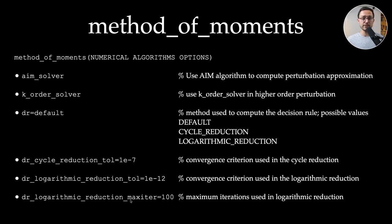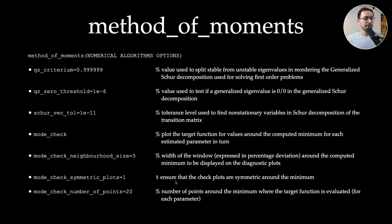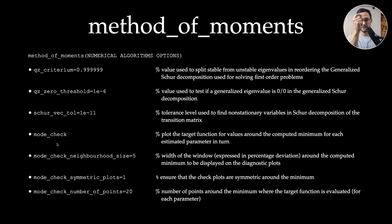An important option is 'mode_check', which plots the objective function around the computed minimum for each estimated parameter in turn — similar to the mode_check command in estimation — so you can verify that optimization found a genuine minimum.